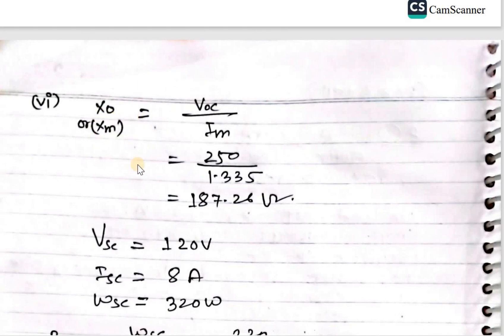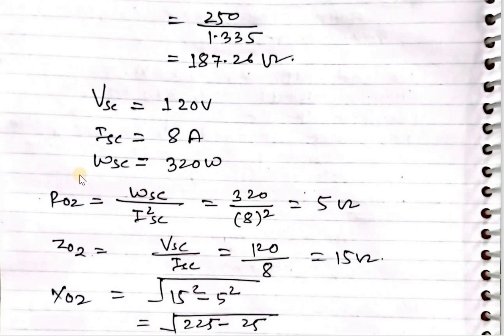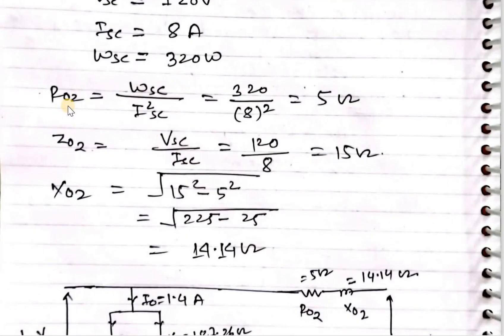From short circuit test: Vsc equals 120 volt, Isc equals 8 ampere, and Wsc equals 320 watt. R02 equals Wsc upon I square sc.